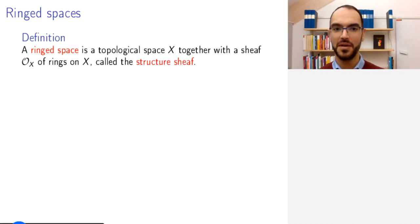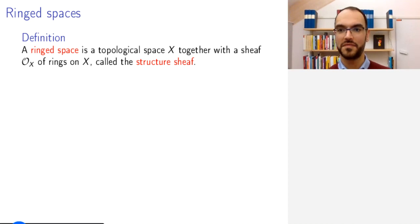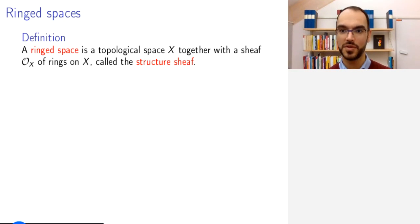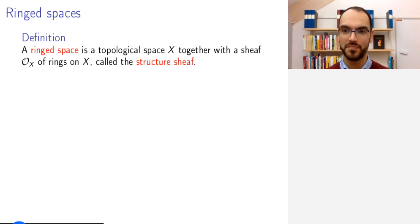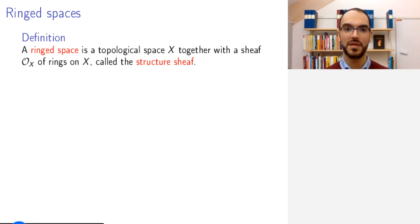Now we have defined a sheaf, namely the sheaf of regular functions on our algebraic set. And a topological space with a sheaf of rings defined over it has a name, namely a ringed space.